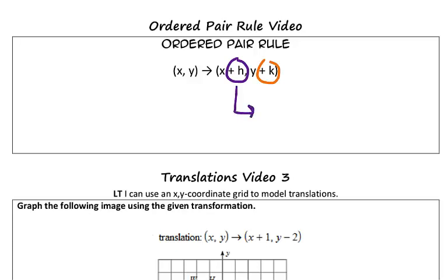Well, we know that on a graph, the X value tells us to either move left or right on the coordinate grid. So, the H value tells us to do that exact same thing. It tells us to translate or move H units left or right.